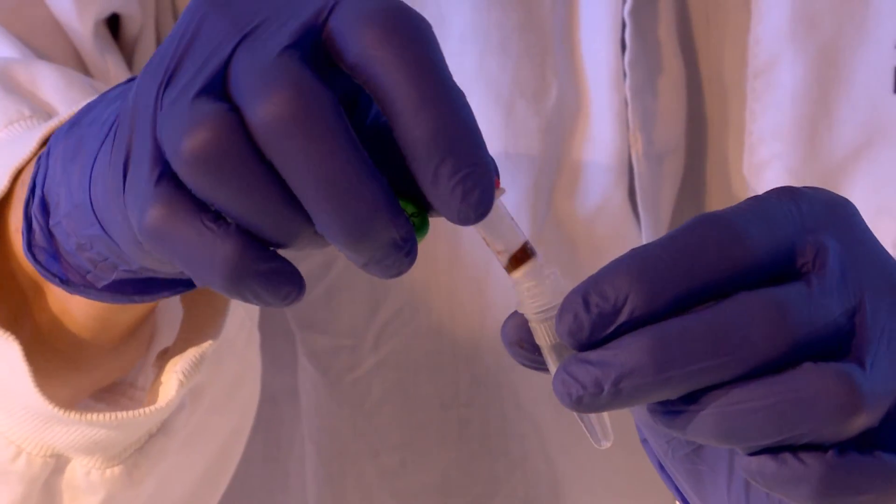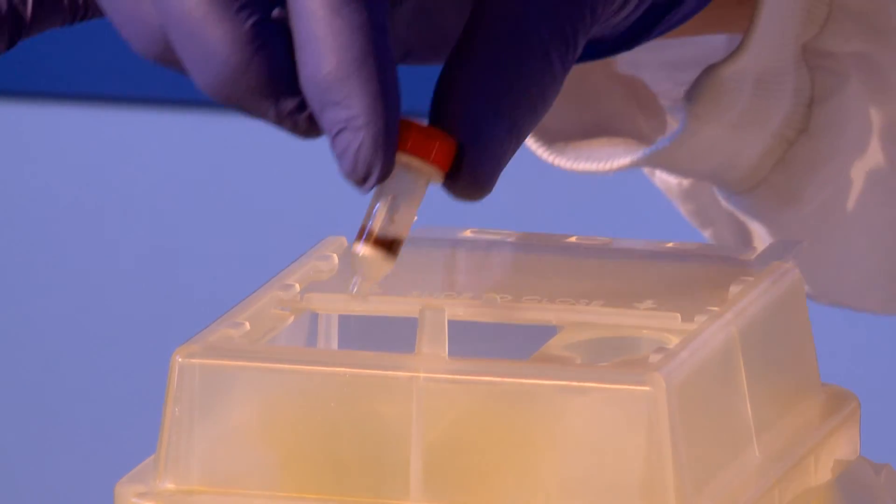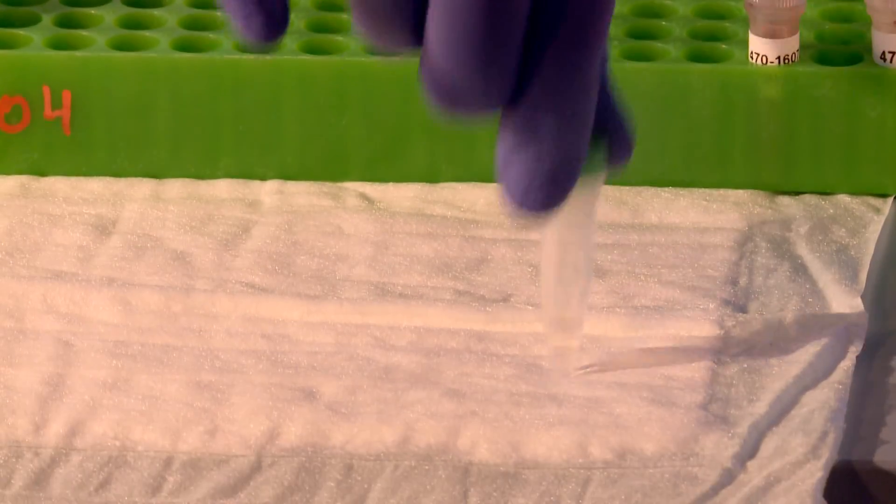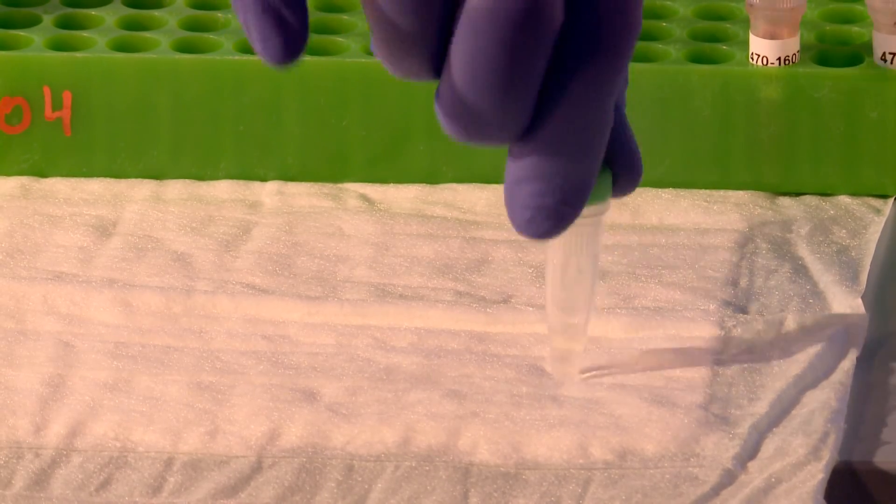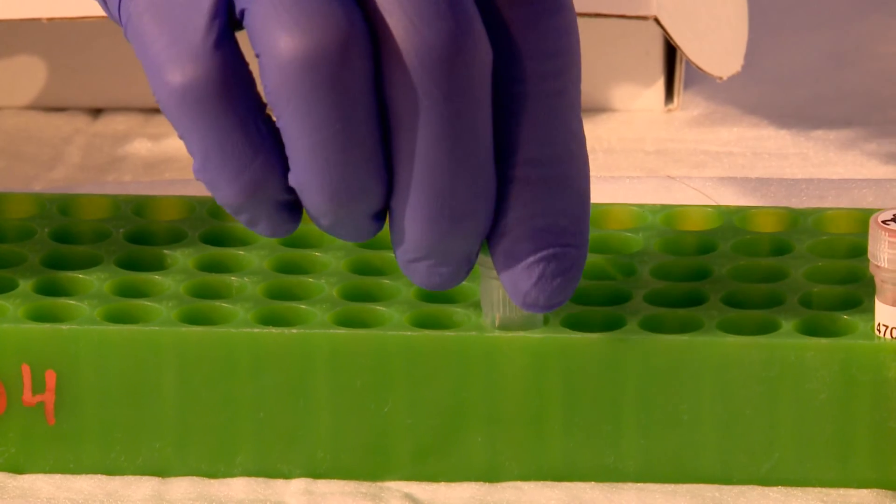Remove the collection vial from the column and close the tube with the green cap. Take care to discard the column into a biohazard container. Gently mix the contents of the collection vial now containing the extracted DNA. The extracted DNA is suitable for use in most PC-run reactions.